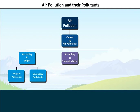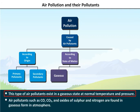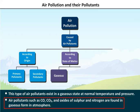According to state of matter, gaseous air pollutants exist in a gaseous state at normal temperature and pressure. Air pollutants such as CO, CO₂, and oxides of sulfur and nitrogen are found in gaseous form in the atmosphere.